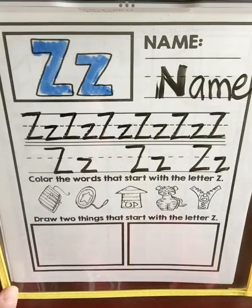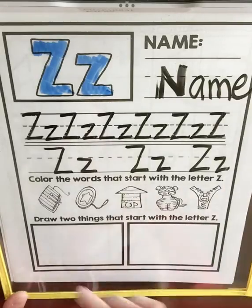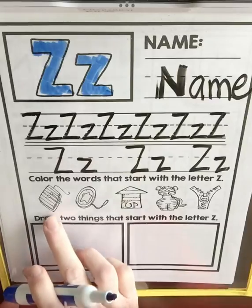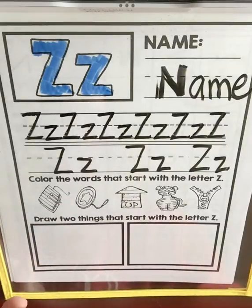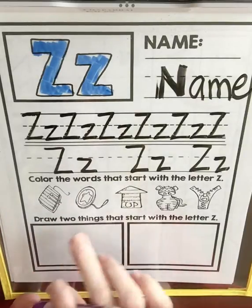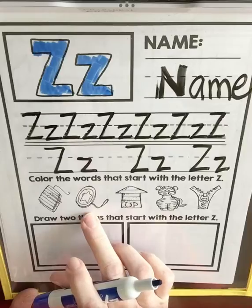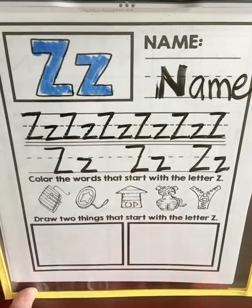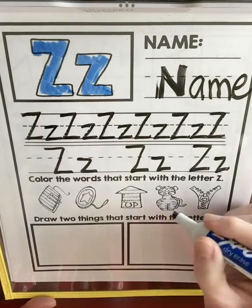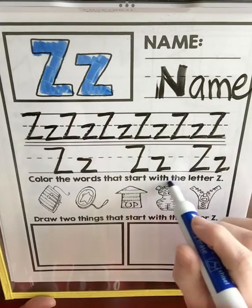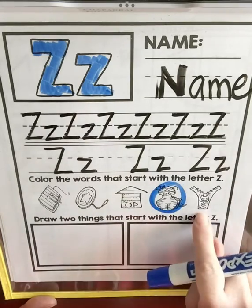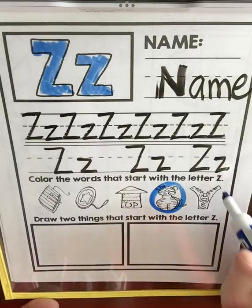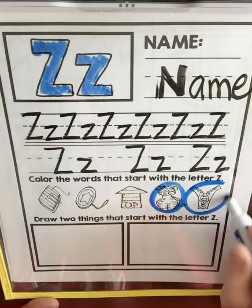Color the words that start with the letter Z. I'm going to circle words that start with the letter Z. Xylophone sounds like a Z but it's actually an X. Yoyo — that's a Y. Up — that's the letter U. Zebra, that starts with a Z, so I'm going to circle the zebra. And zipper — that also does.